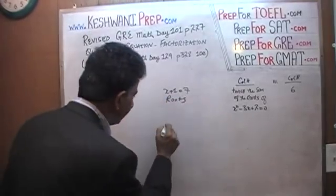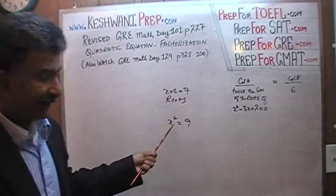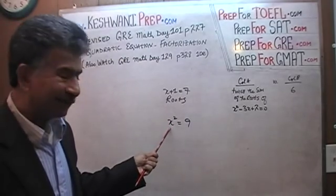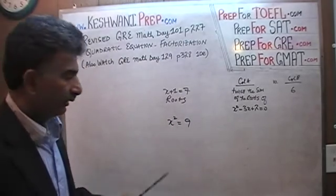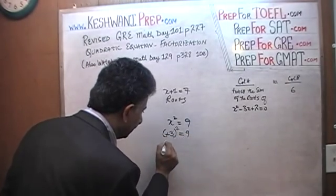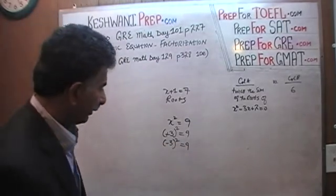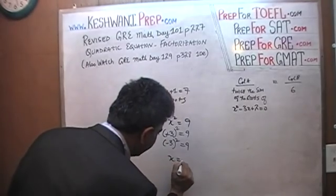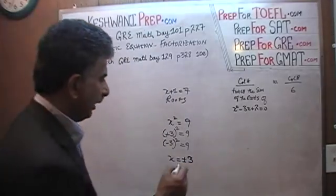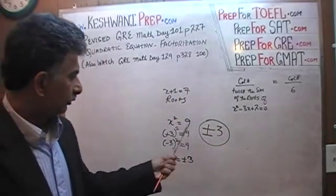Can you tell me the root of x² = 9? Because it's a quadratic equation — it has a second power — it has two roots. There are two values of x that satisfy this equation: x can be positive 3, since 3² = 9, or x can be negative 3, since (−3)² = 9. We write it as x = ±3. Those are the two roots.